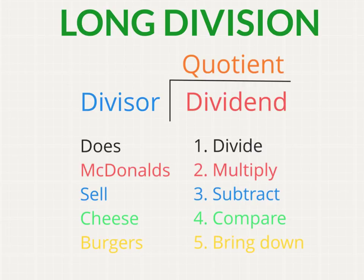Now let's review today's lesson. We spoke about long division. We reminded you the three critical parts are the dividend, the divisor, and the quotient. There's a mnemonic we can use — 'Does McDonald's sell cheeseburgers?' — for divide, multiply, subtract, compare, and bring down. We went through a few examples, including one that showed you how to deal with remainders differently in middle school than in elementary school. Thank you.